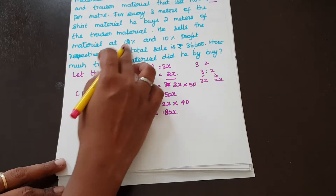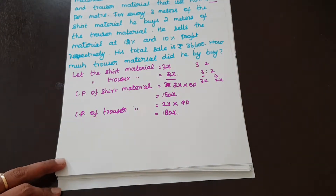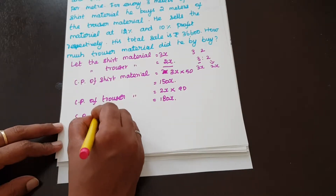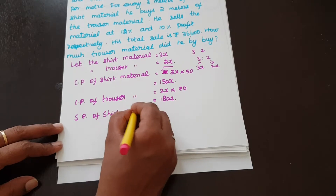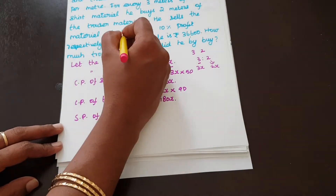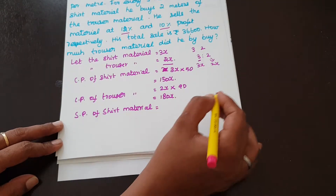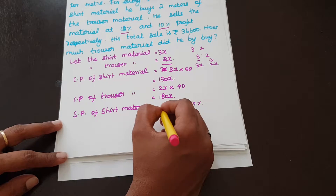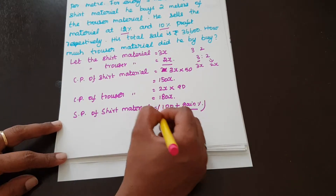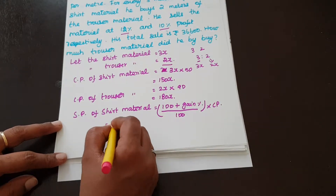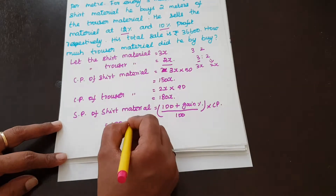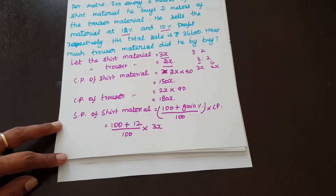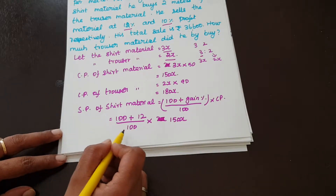He sells the shirt material at 12% profit and trouser at 10% profit. The selling price formula is: SP = (100 + gain%) ÷ 100 × CP. So selling price of shirt material = (100 + 12) ÷ 100 × 150X = 112 ÷ 100 × 150X = 168X.